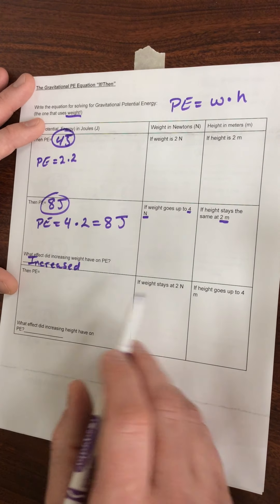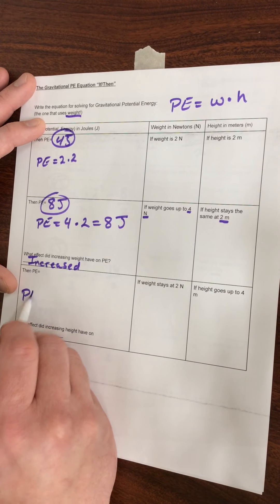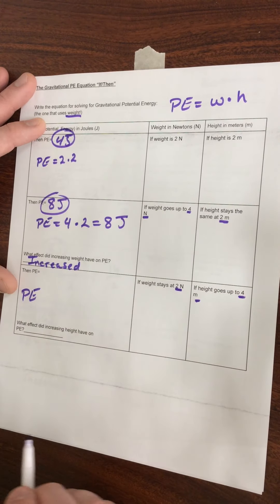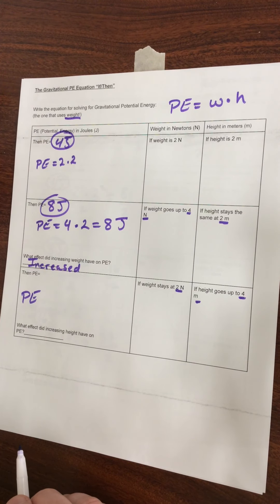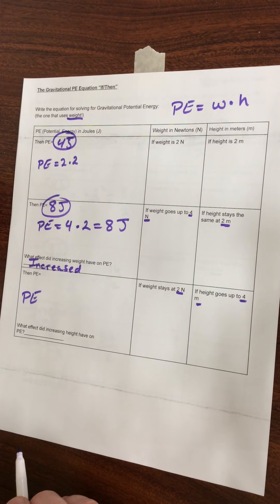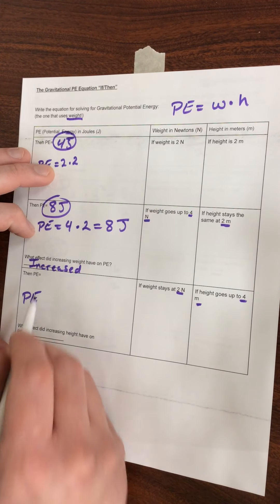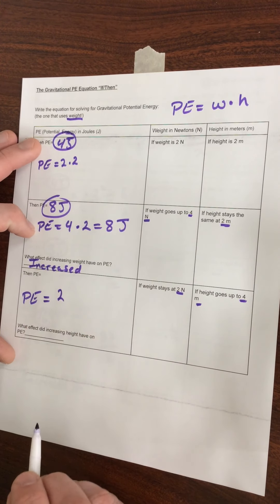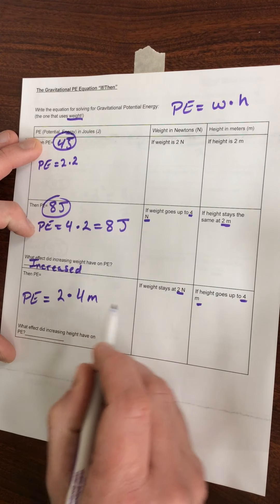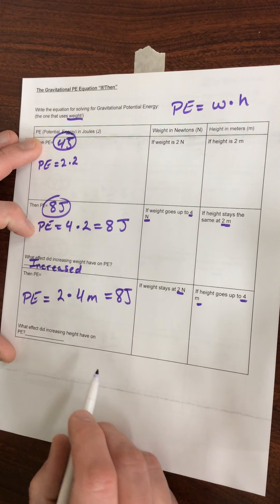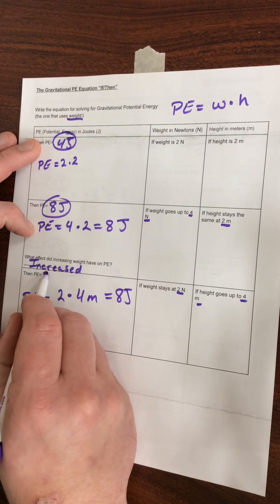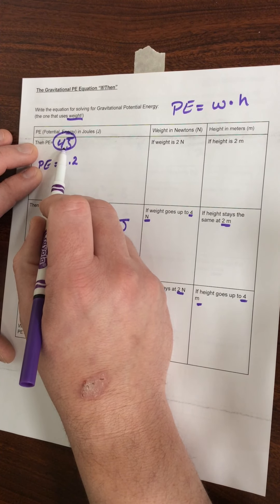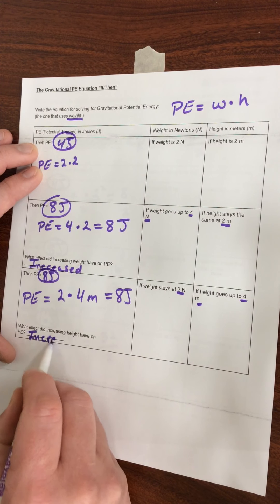Now we're going to do something similar, but we're going to increase the height to four meters and leave the weight at two. Pause the video right here and really think hard about what's about to happen. Think about whether it's going to be the same or different from our last one based on the equation for potential energy. Potential energy, now we have two newtons times four meters. It's going to give us eight again. Multiplication is commutative, so we can switch the order. Eight joules is our final answer, and compared to our original, it increased again.